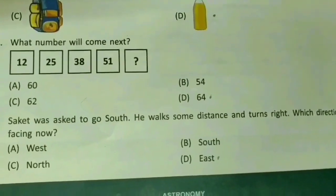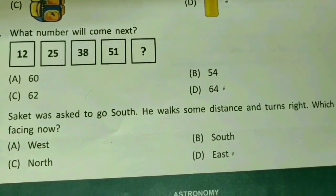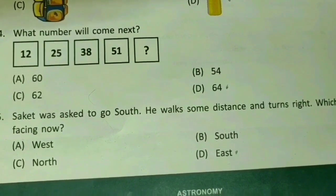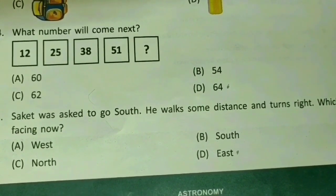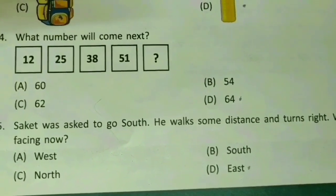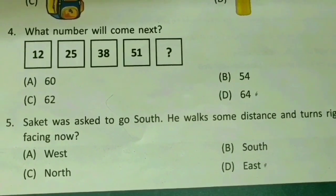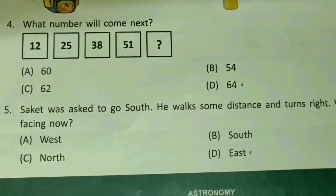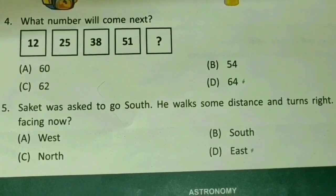Moving on to question 4 — again, logical reasoning. The sequence is 12, 25, 38, 51. 12 plus 13 is 25, 25 plus 13 is 38, 38 plus 13 is 51, and 51 plus 13 is 64. So the answer is 64. Easy — you just keep on adding 13.